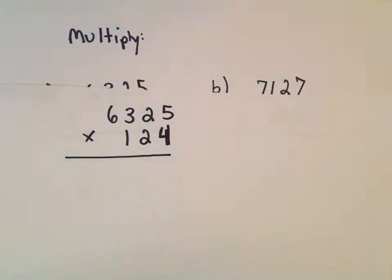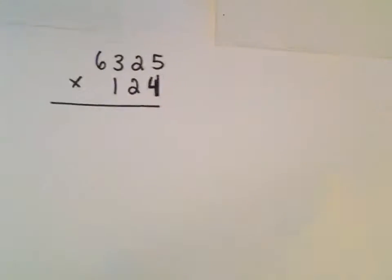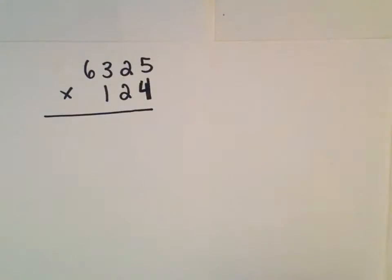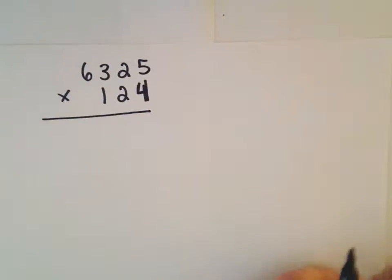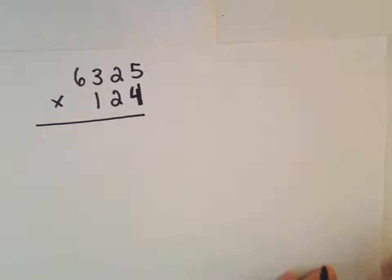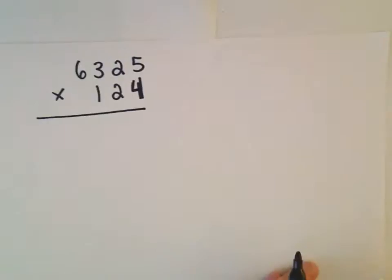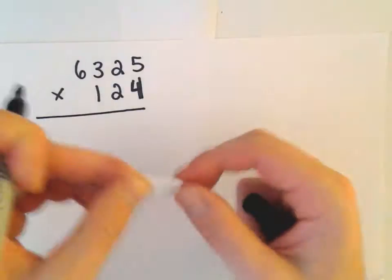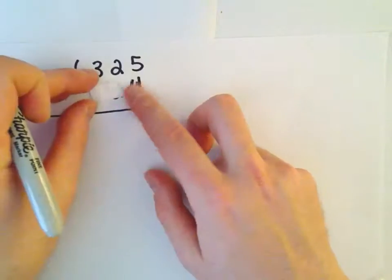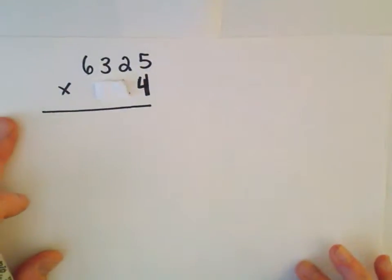And what I'm going to do is just the same process that we've seen. So let me get another little piece of paper here. So I'm going to pretend like there's only a single digit at a time. So I'm going to cover up the 1 and the 2, and I'm just going to multiply.